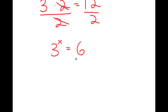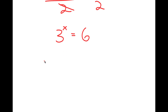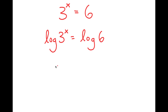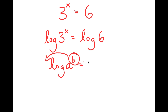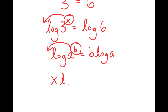From here, what I'm going to do is take the log on both sides. So I get log 3 to the power of x is equal to log 6. If I have something in the form log a to the power of b, I can move the exponent to the front, so this turns into b times log a. In this case, I can move x to the front, so this turns into x times log 3 is equal to log 6.